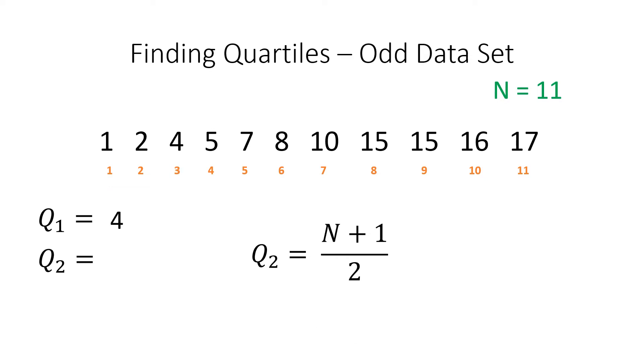For Q2, we'll use the entire data set. 11 plus 1 gives us 12, and 12 divided by 2 gives us 6. The 6 that we just calculated refers to the position, Q2 is equal to 8.